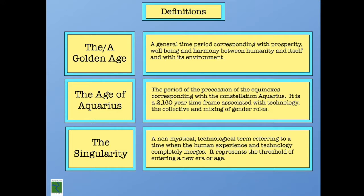I want to give a couple definitions first because they're somewhat interchangeable. First is the golden age, or a golden age. This means a general period of time corresponding with prosperity, well-being and harmony between humanity and the environment. The golden age is generally a good thing. However, a golden age can be relative. One man's golden age is maybe another man's prison.